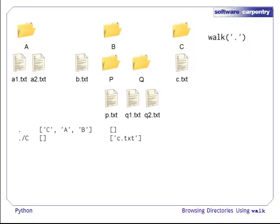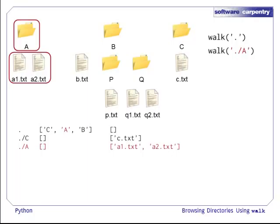And we are back in the original call to walk. This now moves on to the next directory in the list, which is A. A has no directories, and two files, A1.txt and A2.txt. A has no sub-directories, so the call to walk on A exits.